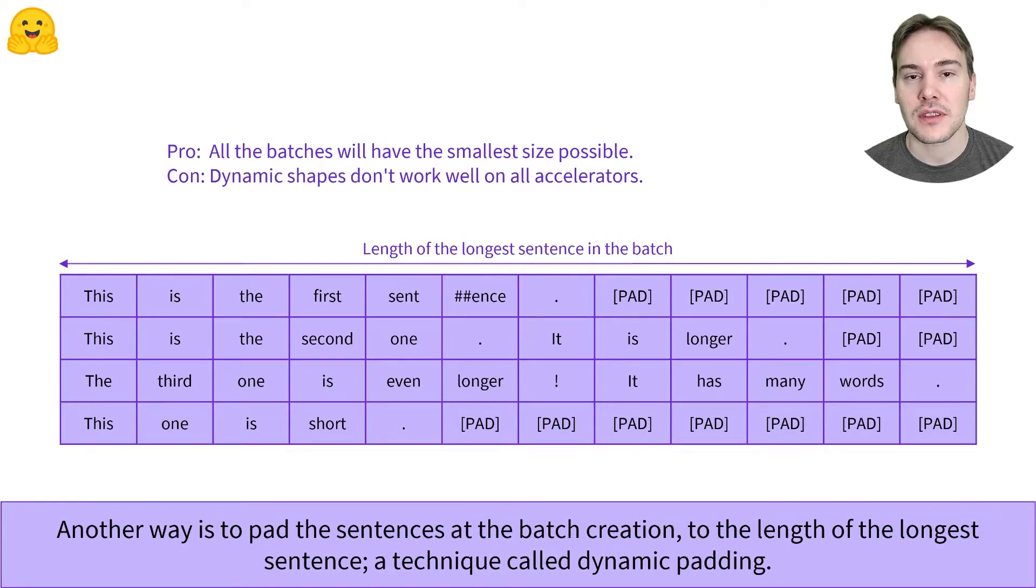This will lead to some nice speedup on CPU and GPU. The downside is that all batches will then have different shapes, which slows down things on accelerators like TPUs.